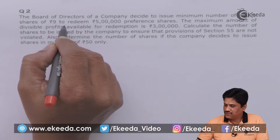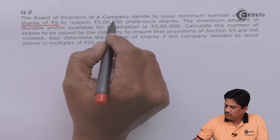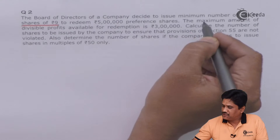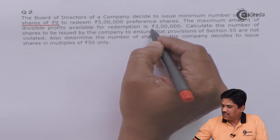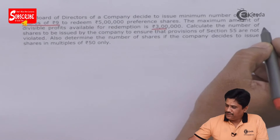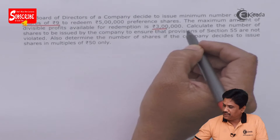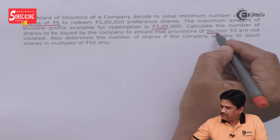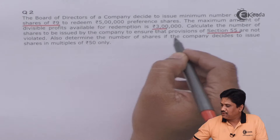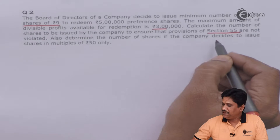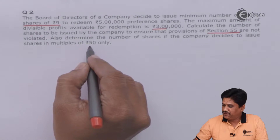The shares have a face value of rupees nine each. They need to redeem rupees five lakh preference shares. The maximum amount of divisible profit available for redemption is three lakhs. Calculate the number of shares to be issued by the company to ensure that the provisions of Section 55 are not violated. Also determine the number of shares if the company decides to issue shares in multiples of rupees 50 only.